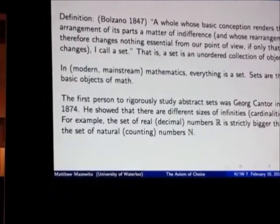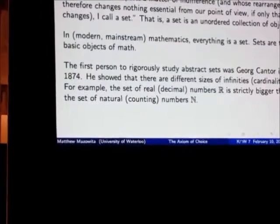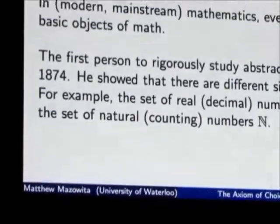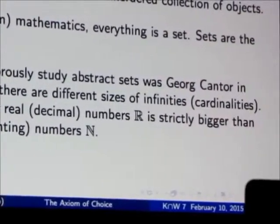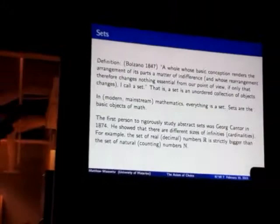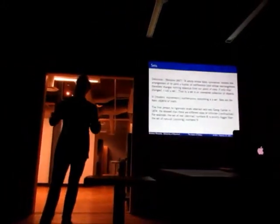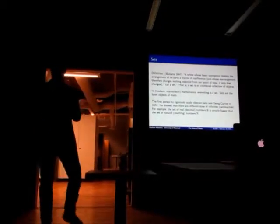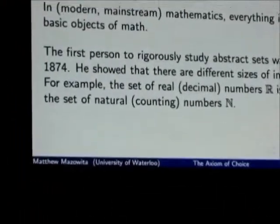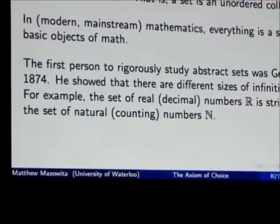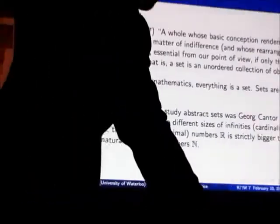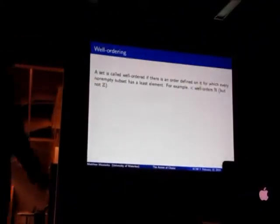The first person that really rigorously studied sets in the abstract, not sets of numbers, was this guy Georg Cantor, in 1874. He was interested in abstract sets and these different sizes of infinity. I gave a talk last year on these different sizes of infinities, we call them cardinalities. The example I want to introduce now, because we're going to come back to it, is that the real numbers, which is what mathematicians call the decimal numbers, these are a strictly bigger size of infinity than the natural numbers, which are just the positive counting numbers.